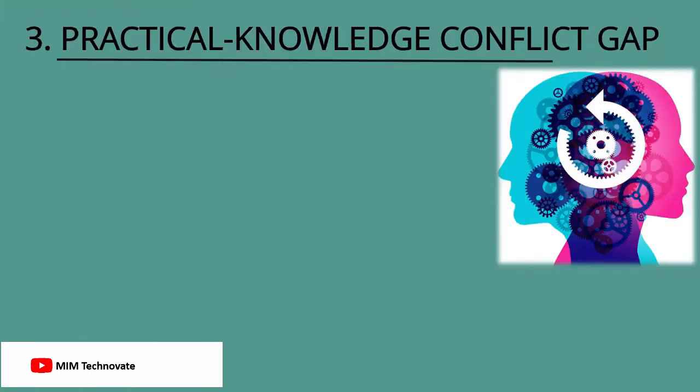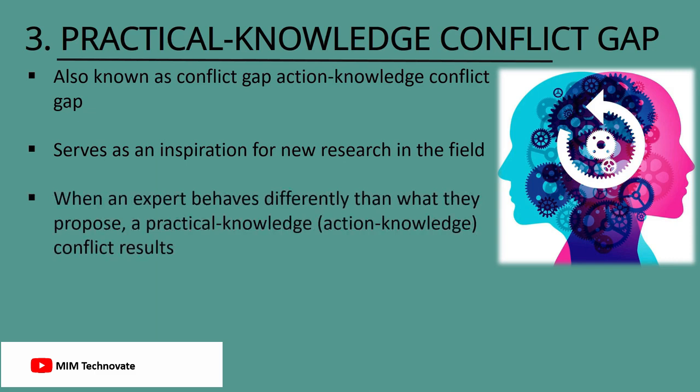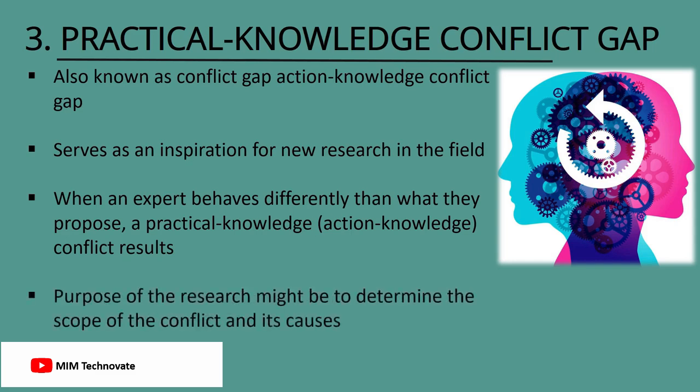Practical knowledge conflict gap, also known as action knowledge conflict gap, serves as an inspiration for new research in the field. When an expert behaves differently than what they propose, a practical knowledge action knowledge conflict results. In this situation, the purpose of the research might be to determine the scope of the conflict and its causes.